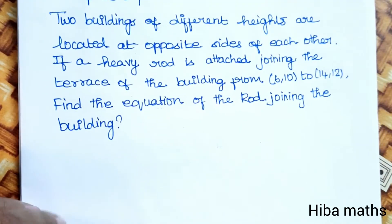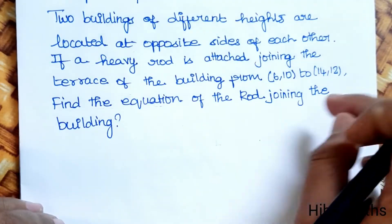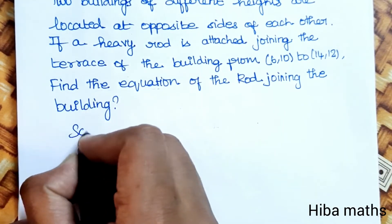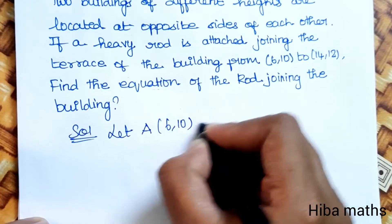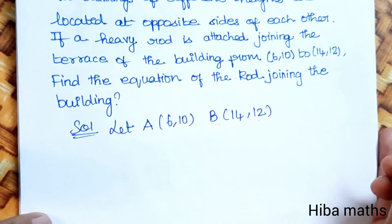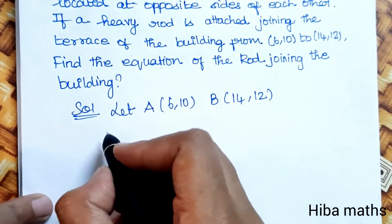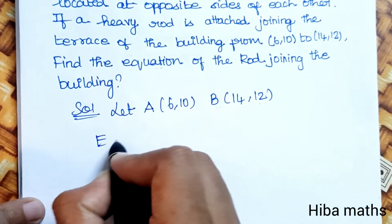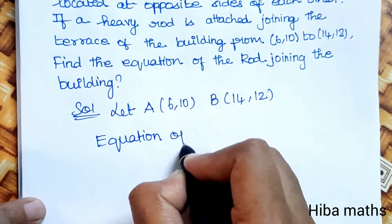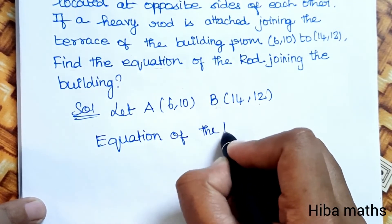The two-point formula is very easy. You can use the two-point formula for the equation. Let A be (6,10) and B be (14,12). So you can find the equation of the rod.